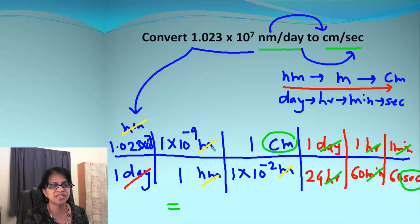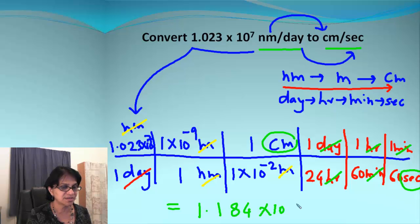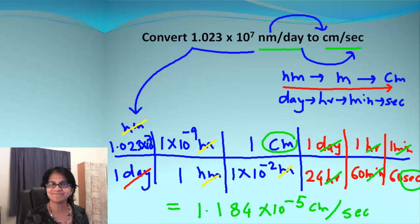The only thing we need to do is multiply all the numbers in numerator, multiply all in denominator and divide both till you get the answer. And I got the answer for this as 1.184 times 10 to the negative 5 centimeters per second. So not that difficult, right? It's quite easy.